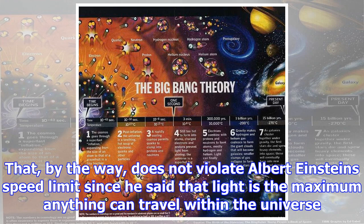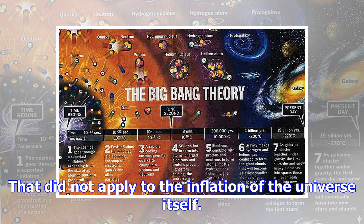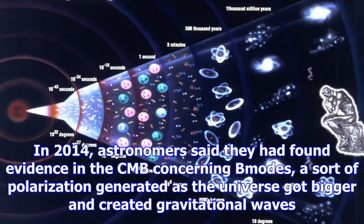Theory says that in the first second after the universe was born, our cosmos ballooned faster than the speed of light. That, by the way, does not violate Albert Einstein's speed limit since he said that light is the maximum anything can travel within the universe. That did not apply to the inflation of the universe itself.